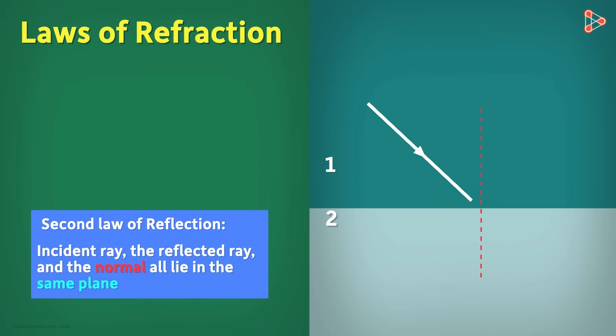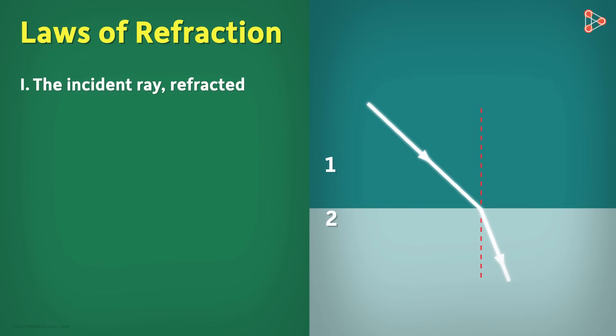Consider light travelling from some medium 1 to another medium 2, which is optically denser than medium 1. So its speed in medium 2 decreases and it bends towards the normal. The first law of refraction says that the incident ray, refracted ray, and the normal at the point of incidence all lie in the same plane. It means that if I were to draw this on a piece of paper, they all will be on the plane of paper and not out of the paper.